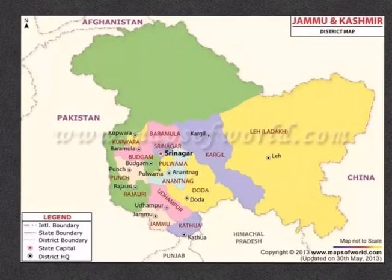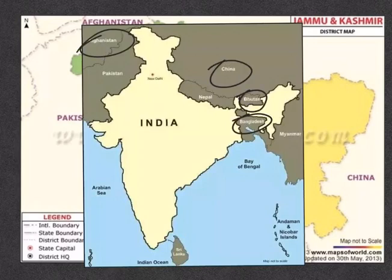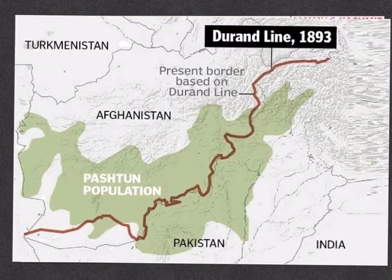Before going further to understand the origin of the border between India and Afghanistan, let us first try to locate the Wakhan Corridor and Durand Line on the map. As per the official map of India, India has a boundary of 15,000 kilometers with 7 countries — Bhutan, Bangladesh, China, Afghanistan, Myanmar, Nepal and Pakistan. India and Afghanistan are separated by the Durand Line, which is a boundary line demarcated by Sir Mortimer Durand.